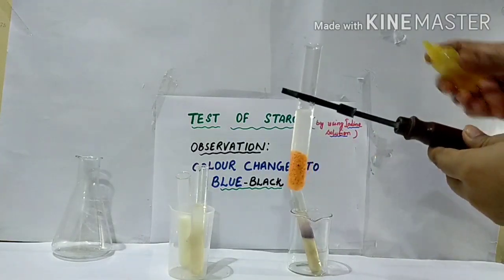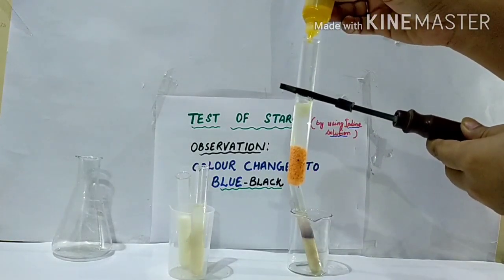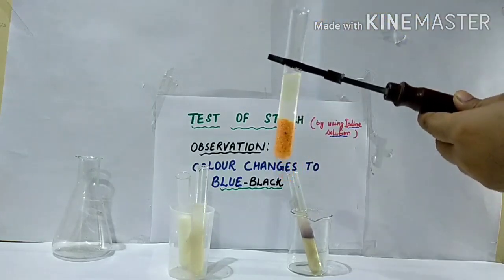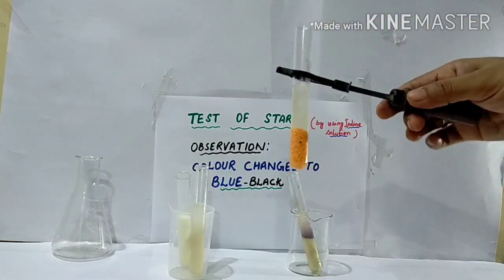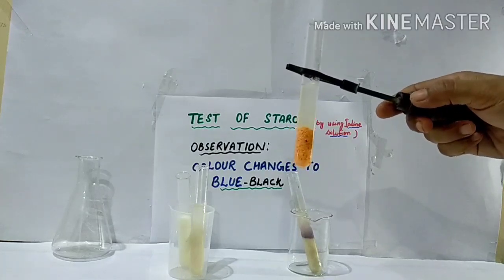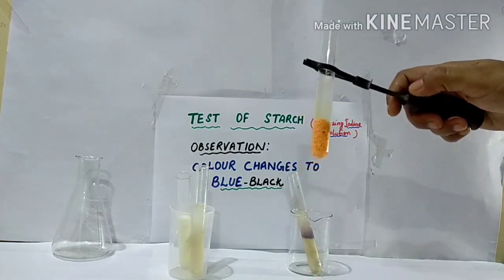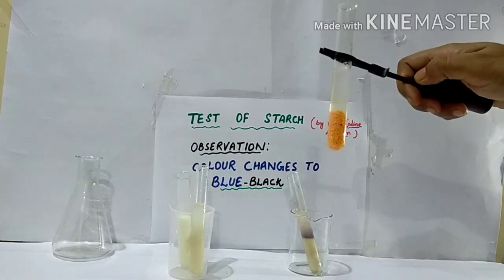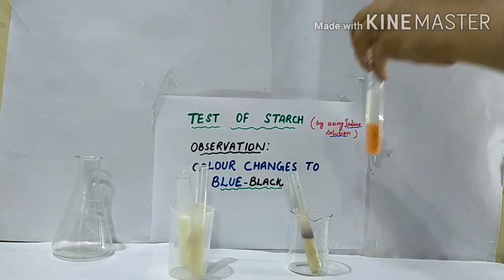Next, I will take pulses. I have taken pulses and I will add a few drops of iodine solution into them. You can see the color has not changed. It means that pulses do not contain starch — we all know pulses contain protein.